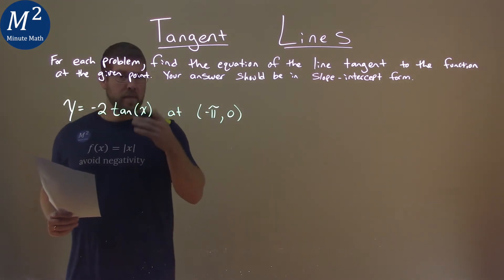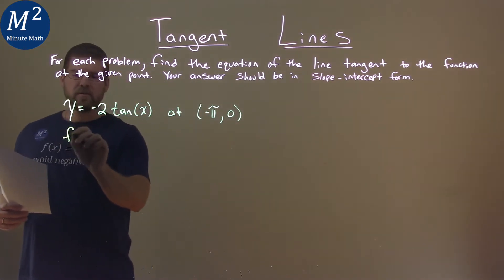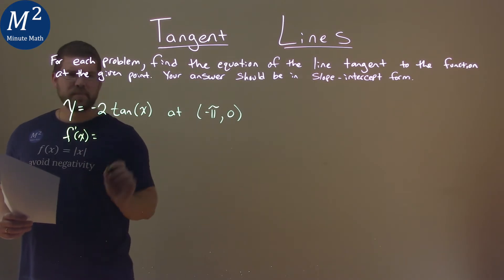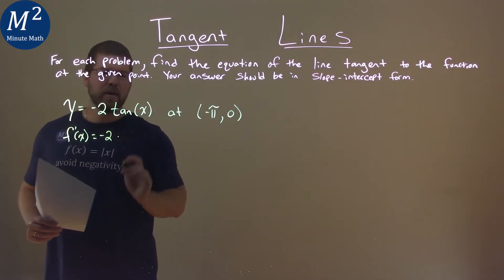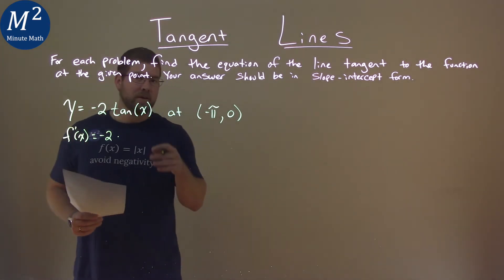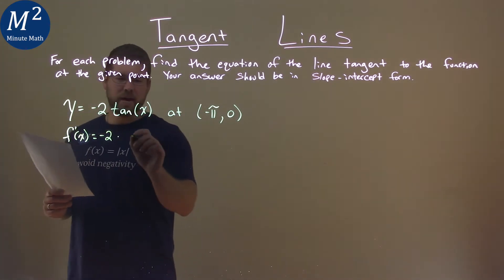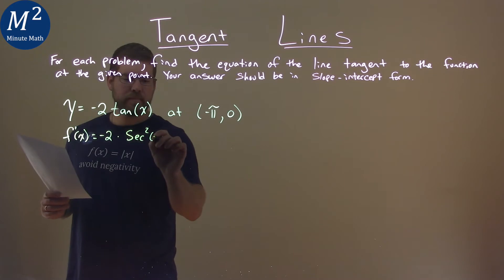First thing I need to do is find the derivative of our function. Let's call it f prime of x. Well, negative 2 can just stay out front here. We're multiplying that by the derivative of tangent x, which is secant squared x.